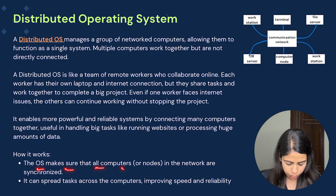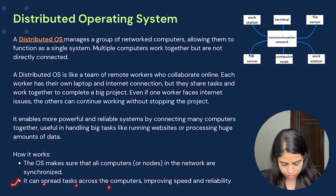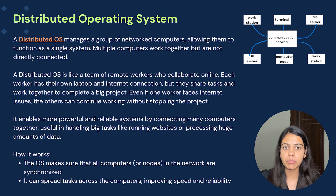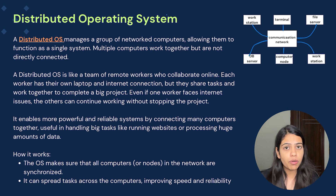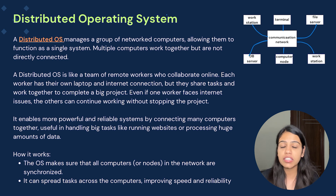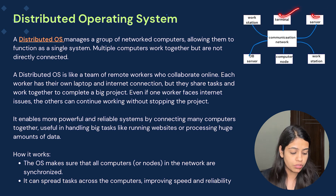How does it work? The operating system makes sure that all the computers or nodes in the network are synchronized. It can spread tasks across the computers, improving speed and reliability — for a big project, multiple tasks could be spread among different computers. Also, in a distributed operating system, all the nodes or computers are loosely coupled. They are connected via network but don't share the same storage. Every node has its own storage. If one of the nodes stops working, there is a redistribution of tasks among all the other working nodes.